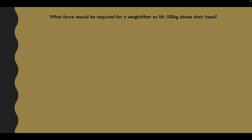So what force would be required for a weightlifter to lift 100 kilograms above their head? So we've been asked for the force and we've been given the mass. Let's have a look at what formula we know that includes these. The force is equal to the mass of the object multiplied by the acceleration. And if you remember from the beginning when I mentioned about acceleration by gravity, what do I actually mean by that?